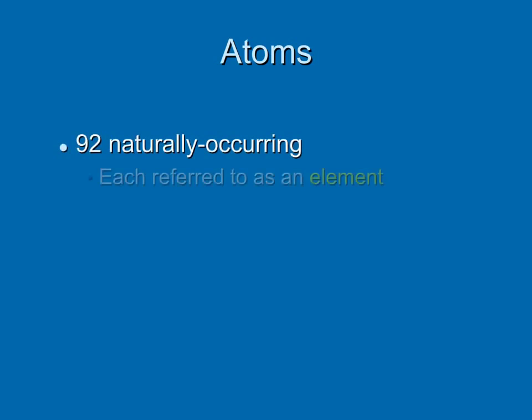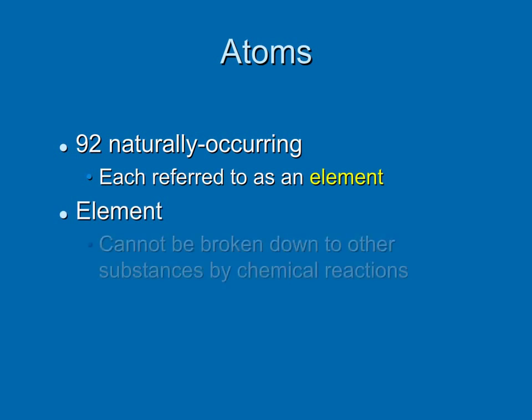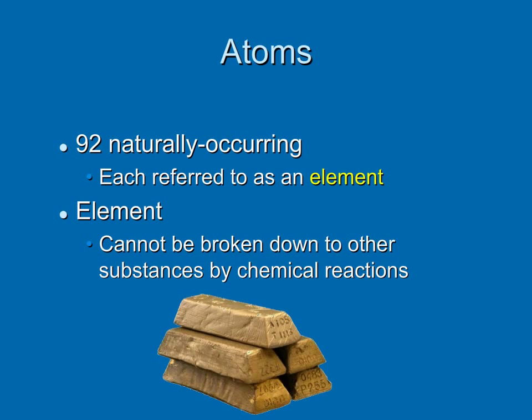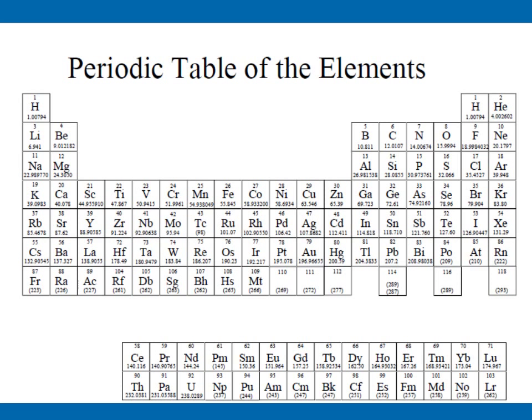There are 92 types of atoms that naturally occur, and each of them is referred to as an element. So if we were to take a big lump of pure gold, it is composed of atoms. And all the atoms are of a specific element, gold. As we discovered earlier with our frog friend, atoms are the units of matter. And we can find all the known elements on the periodic table. And here it is.